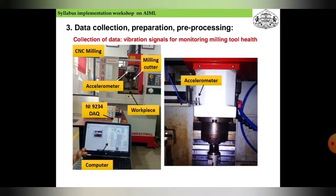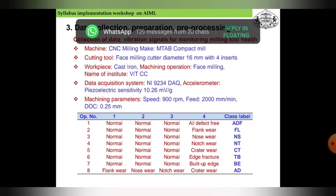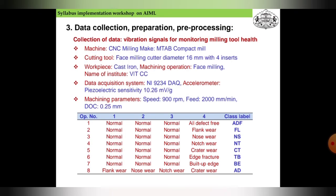In this picture, a CNC machine is shown with a milling cutter, accelerometer, DAQ system, workpiece, and computer. An accelerometer is also attached to the machine arm. This specific assembly is used to demonstrate data collection, preparation, and pre-processing. Data is collected in terms of vibration signals for monitoring milling tool health, using a CNC milling machine with a face milling cutter of 60 mm diameter with four inserts.